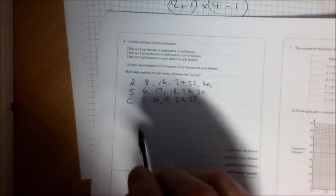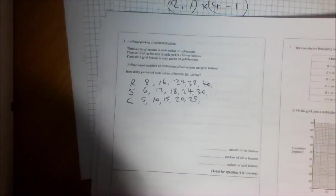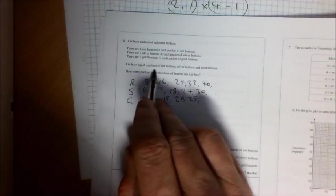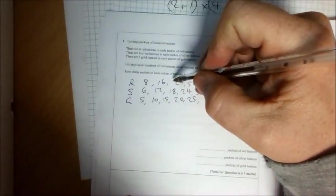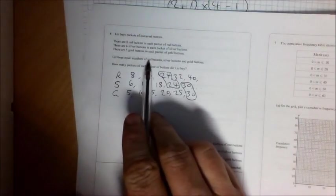These are possible lists of how many of each type of buttons she'll have depending on how many she buys. Now, I'm going to understand this next thing. Liz buys equal numbers of red buttons, silver buttons, and gold buttons. So this would be an example of buying equal numbers of red, silver, and gold. If she's going to buy equal numbers, then I think I need to continue this on.